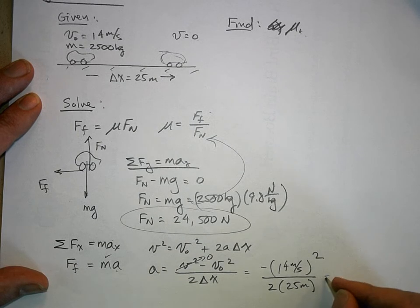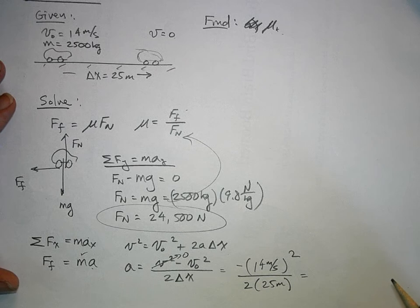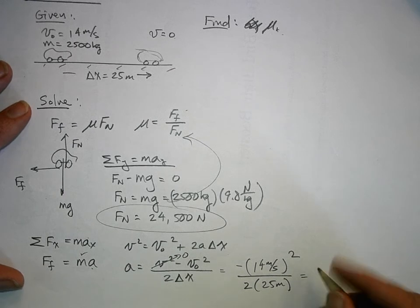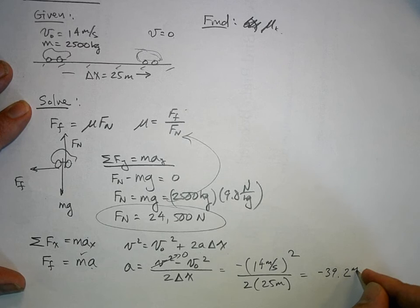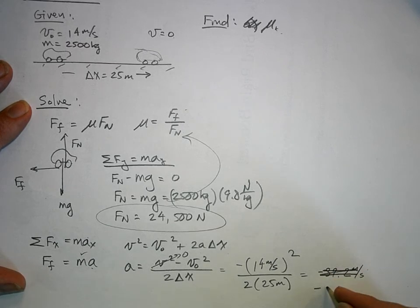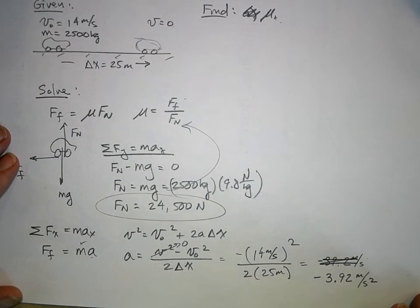And what is our acceleration here? I think it was negative 3 point something. Negative 3.92 meters per second squared. You all agree with that?